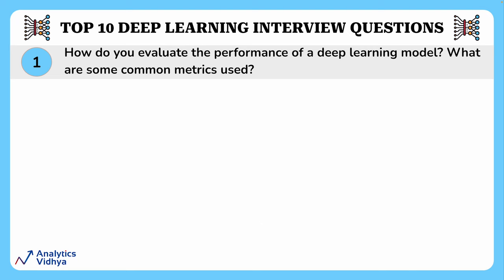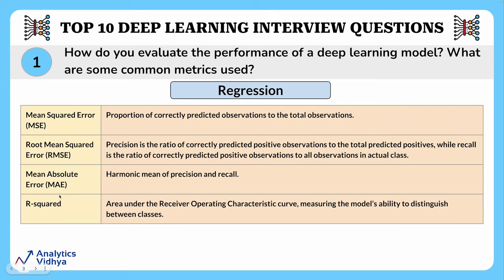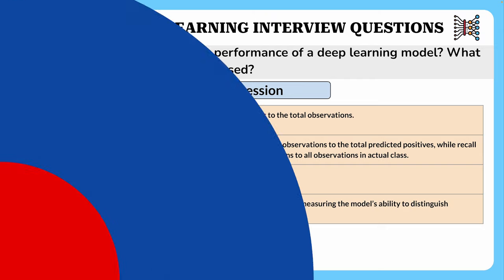As you can see in this table, if it is a classification problem, we use various metrics like accuracy, precision, recall, F1 score, ROC-AUC, and confusion matrix. And if it is a regression problem, then we use metrics such as mean squared error, root mean squared error, mean absolute error, and R squared. Let's move on to the next question.